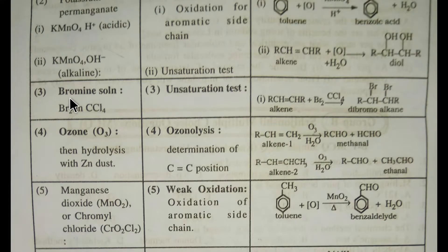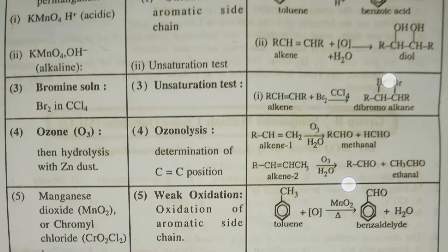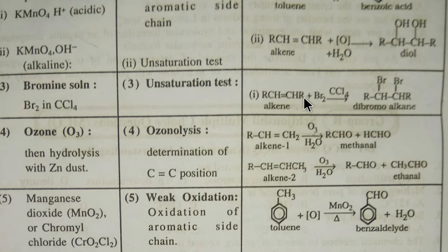Our third reagent is bromine in carbon tetrachloride (CCl₄). It is also used to test for unsaturation. Here, an alkene is an unsaturated compound. If you add bromine in carbon tetrachloride, the color of bromine will change, and thus we can detect the unsaturation of the alkene.